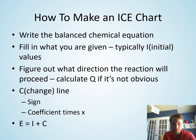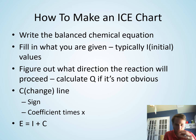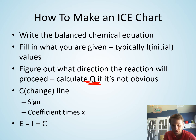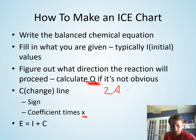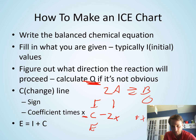To reiterate: we write the balanced reaction, fill in the ICE chart with whatever values we know, and assign an unknown change x. We lose some amount of reactants and gain some amount of products, or vice versa. If it's not obvious which direction the reaction goes, we can calculate Q from initial concentrations and determine whether Q > K or Q < K. Note that if we have 2A → B, the change for A is −2x and for B is +x, because the multiplier comes from the stoichiometric coefficient in front of A.